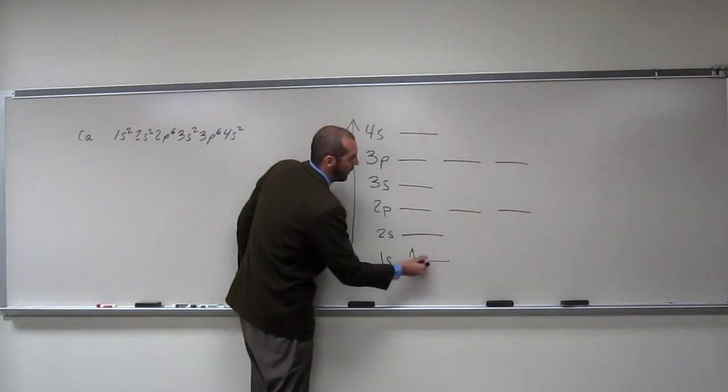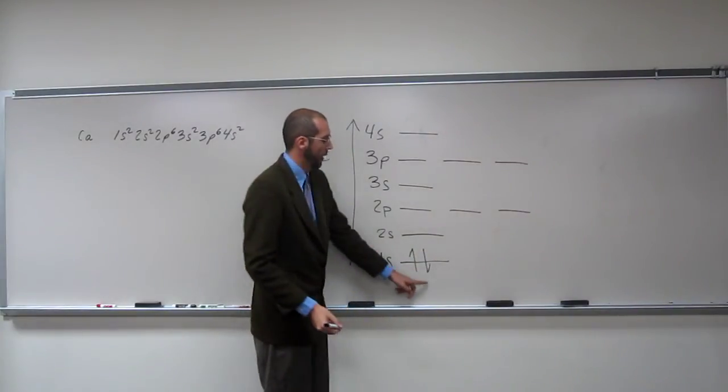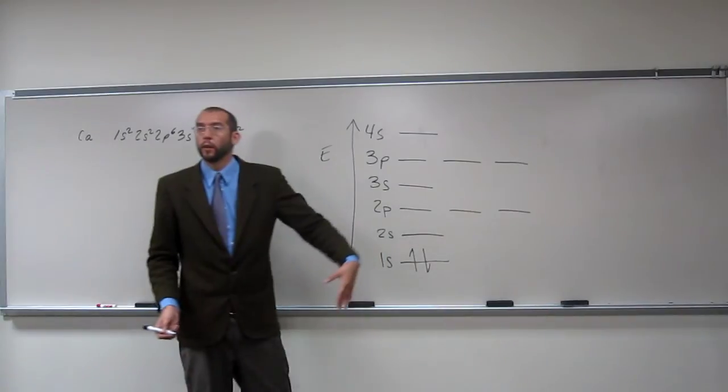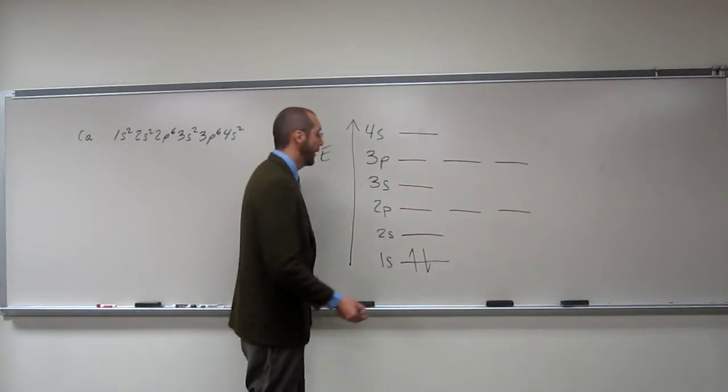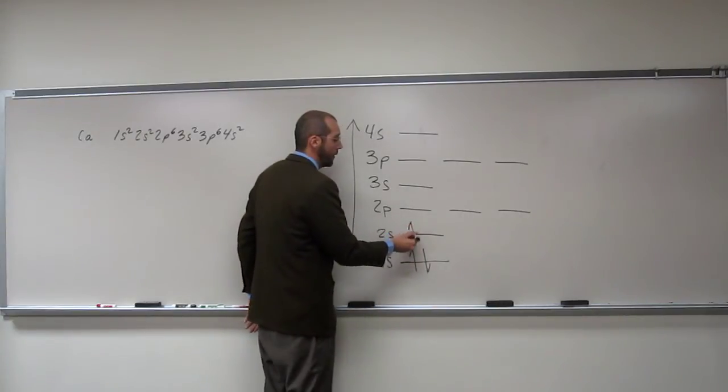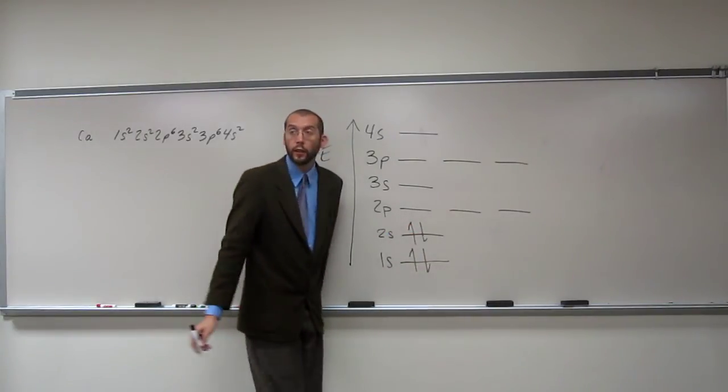Hund's Rule tells us that they like to go to the lowest energy level first. So 1, and then 2 is Pauli exclusion principle. The other one has to go opposite spin, right? Okay, so the next energy level is the 2s. So the first one goes there, the second one goes there, like that.